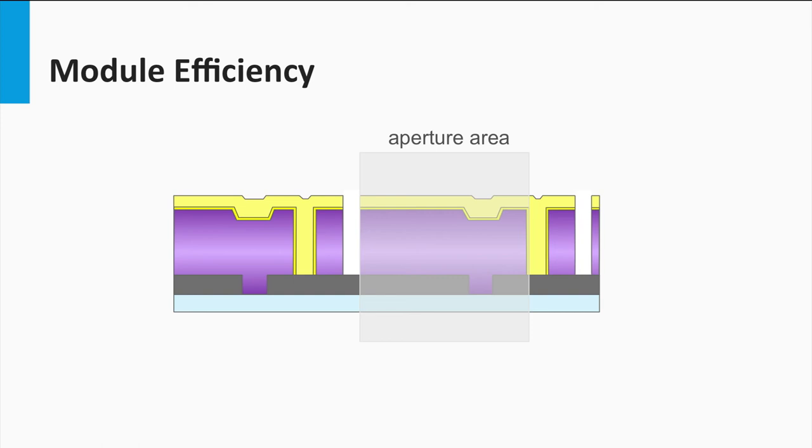The aperture area, which means that only the area of the PV active part is considered when the conversion efficiency is calculated. Total area means that the entire module area is considered when calculating the conversion efficiency. This area includes the dead area created by interconnection and the edges of the module.